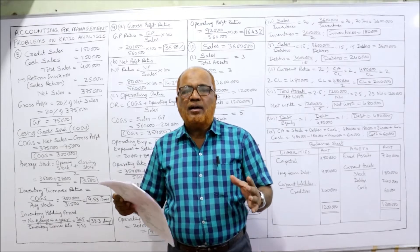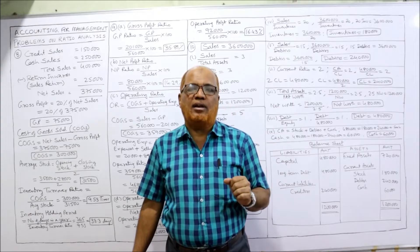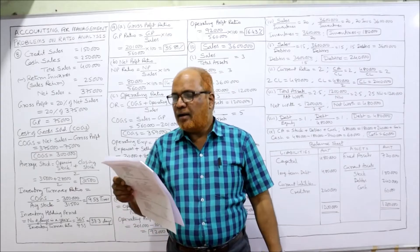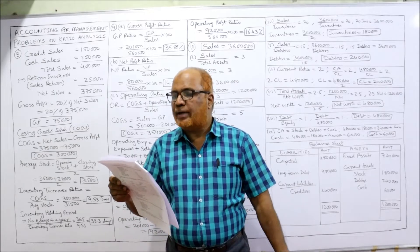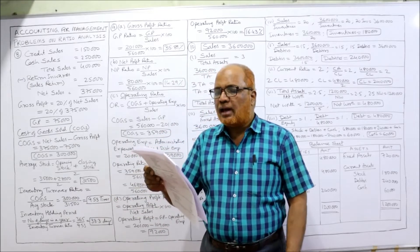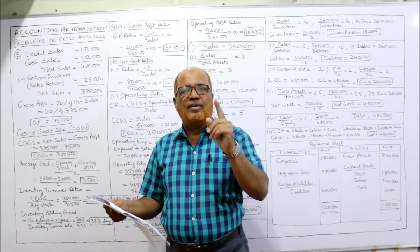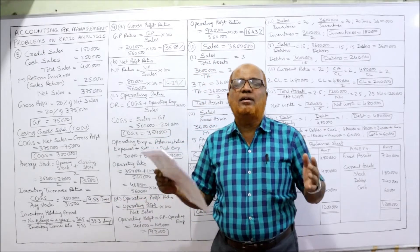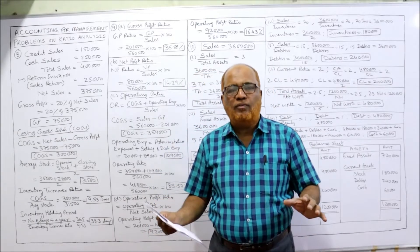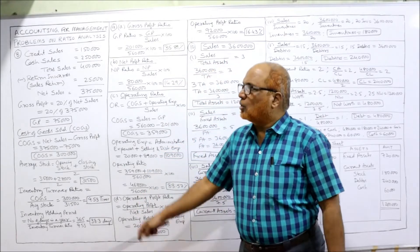Find out inventory turnover ratio. The formula is cost of goods sold divided by average inventory. Gross profit is 20% on sales. Also calculate inventory holding period. Two things to calculate: first, inventory turnover ratio; second, inventory holding period.